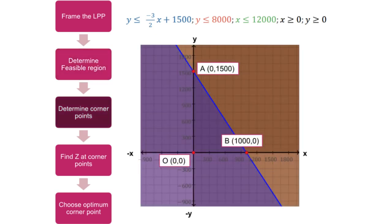We next determine the corner points, which in this case are A(0,1500), B(1000,0), and O(0,0).